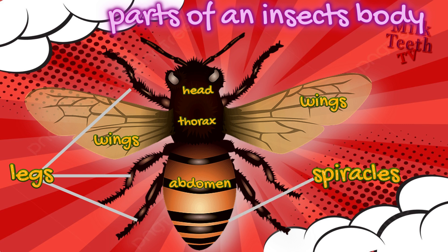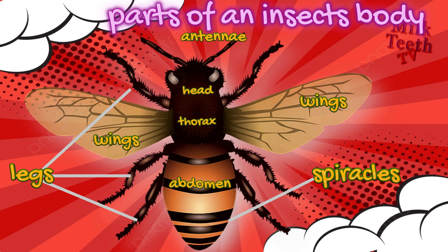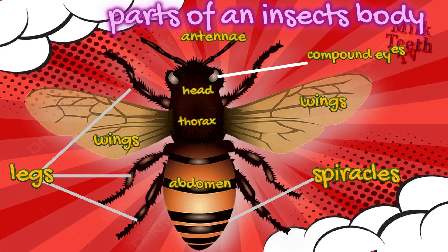Insects also have a pair of antennae or feelers which they use to feel, hear, smell, and taste. Their eyes are called compound eyes. All insects usually have three pairs of legs.